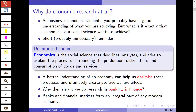This includes economic agents, their behavior, the processes inside a firm, and the mechanisms between firms on markets. A better understanding of an economy can help us optimize these processes, arrive at a better outcome — hopefully higher employment, higher GDP growth, and so on. We are trying to create positive welfare effects for all economic agents and for society as a whole. And that is the ultimate goal of economic research.